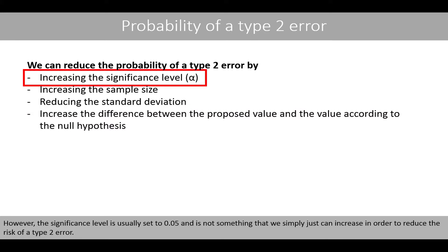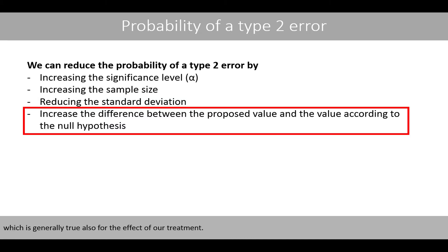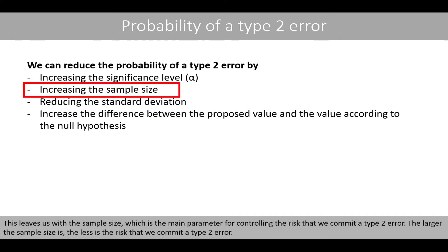However, the significance level is usually set to 0.05 and is not something that we can simply increase in order to reduce the risk of a type 2 error. Also, the spread of the data is not something we can do much about, which is generally true also for the effect of our treatment. This leaves us with the sample size, which is the main parameter for controlling the risk of committing a type 2 error. The larger the sample size, the less is the risk of committing a type 2 error.